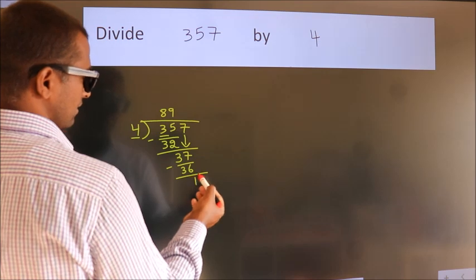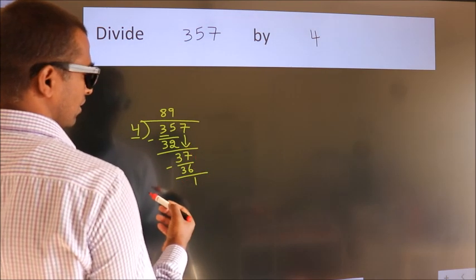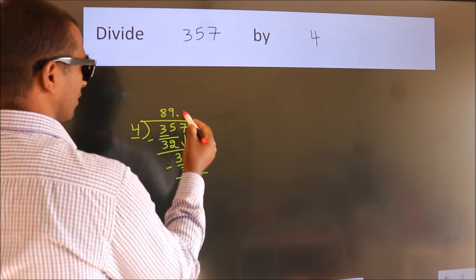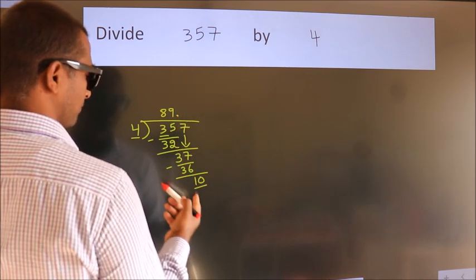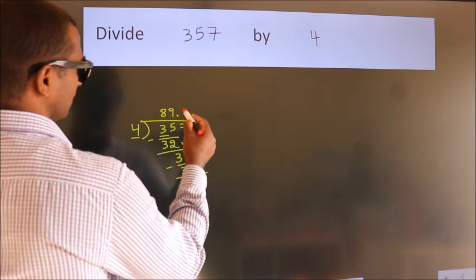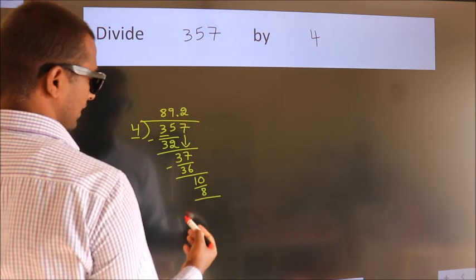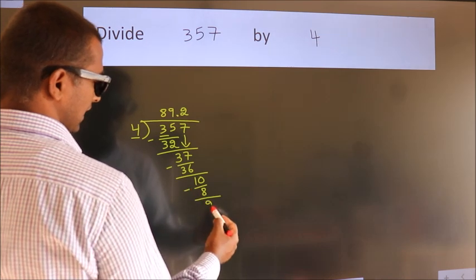After this, no more numbers to bring it down. So what we do is we put a dot and take 0. So 10. A number close to 10 in the fourth table is 4 times 2 equals 8. Now we subtract. We get 2.